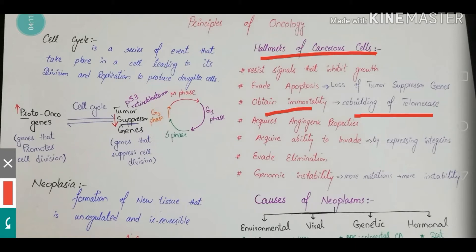With each division, telomerase is reduced, but if telomerase is rebuilt, the cell will have the ability to divide more. By rebuilding telomerase, cancerous cells keep on dividing and proliferating. They also acquire angiogenic properties — they start developing blood vessels around them in their locality so that they can acquire nutrition from the surrounding tissue.